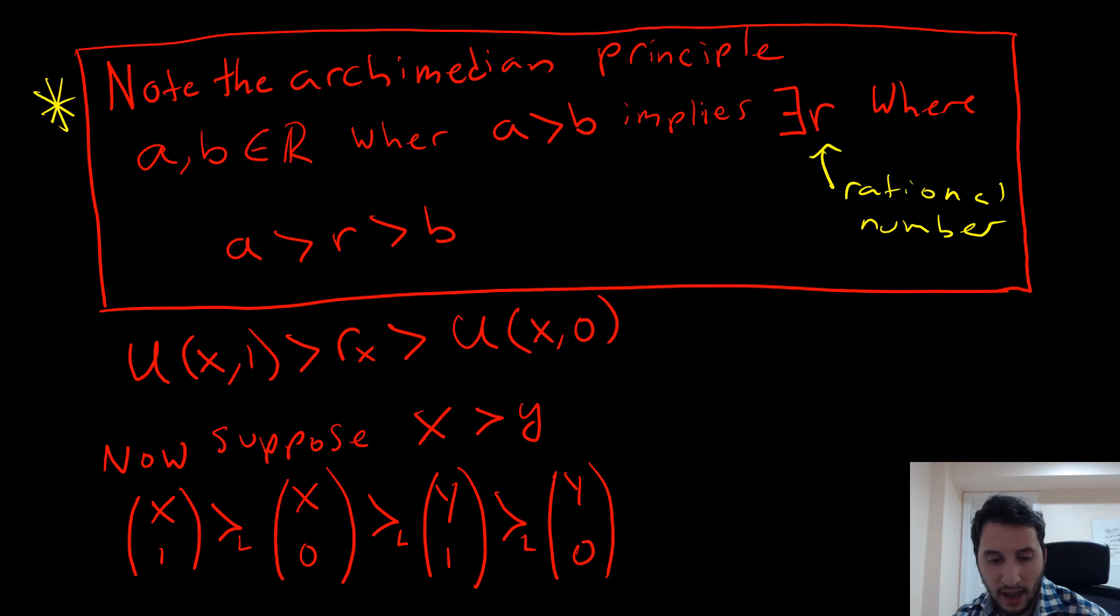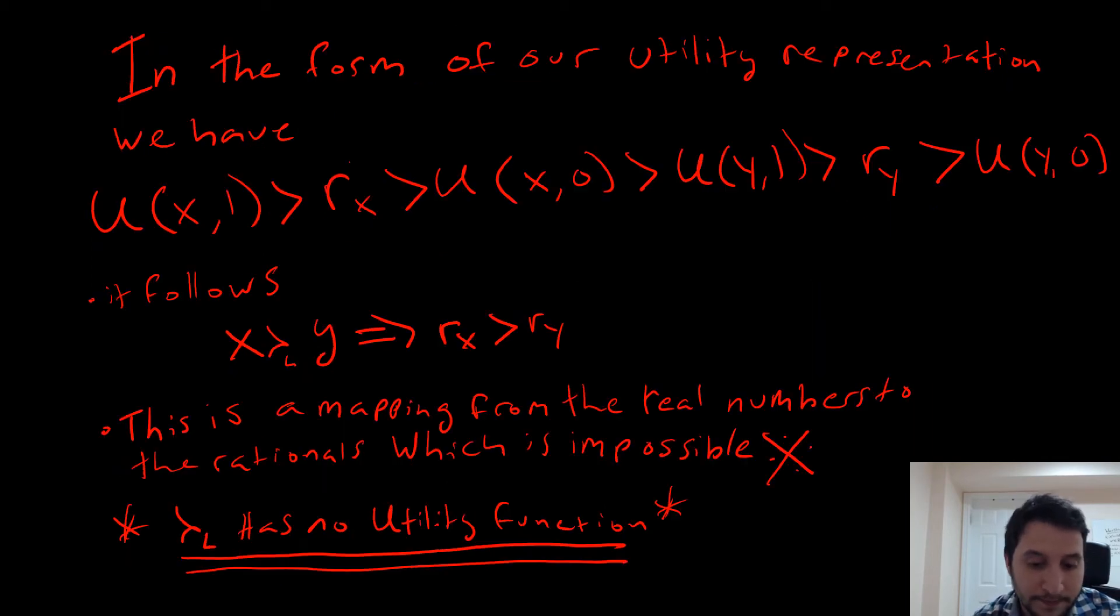Now we're going to suppose that x here is preferred to y, or it is lexicographically preferred to y here. Now we have this set up down here as follows. In the form of our utility function representation, we would have the following. So this could just be u of x1, u of x0, u of y1, and y0 here. But we're putting in the middle here their respective R's. There's nothing wrong in saying that, because that just follows from our Archimedean Principle. If we were to take this and convert this back, meaning what do these utility functions represent, that this cardinal number that comes out represents the ordinality of these preferences, we say that x being lexicographically preferred to y implies that Rx is greater than Ry.